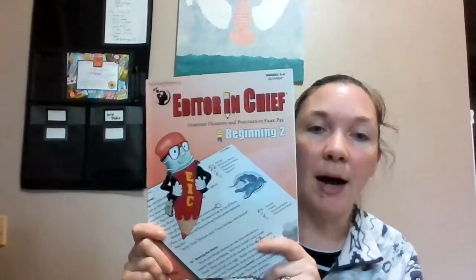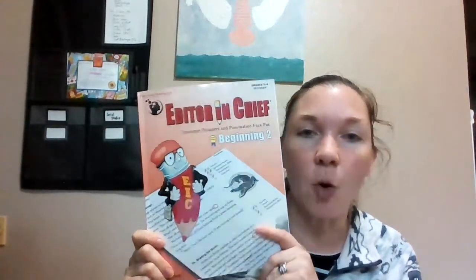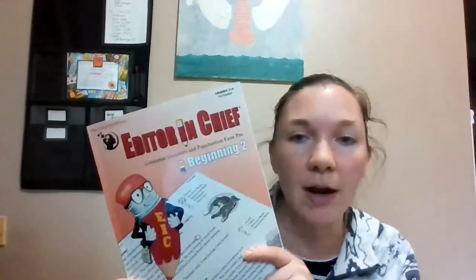And that is it. So it's a total of 139 paragraphs that they would practice. So anyway, this is a flip through of Editor in Chief Beginning 2. It's for grades three to four. And we are doing it fourth grade. And I would say it's right about on level. And we might move on to the next one before the end of fourth grade. But we have some other stuff that we're working through too. So we might not. Let me know if you've used this or any other similar editing style to teach your grammar. And let me know how it's going. Thanks.